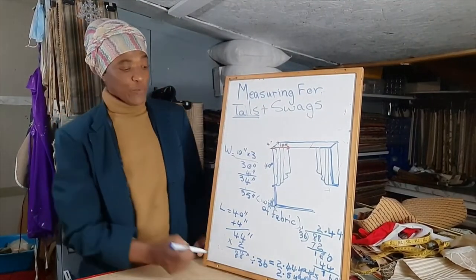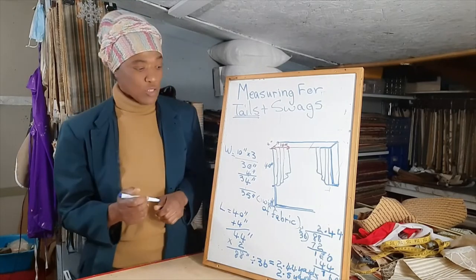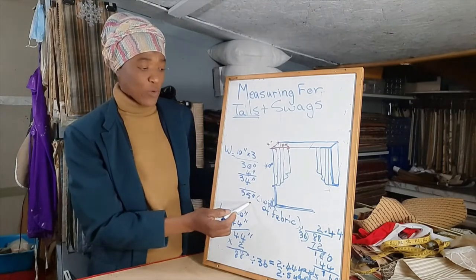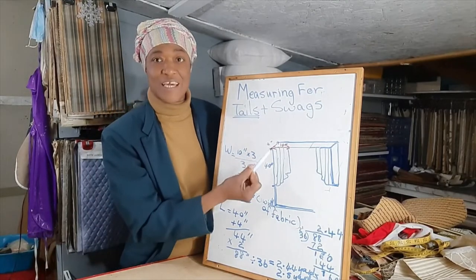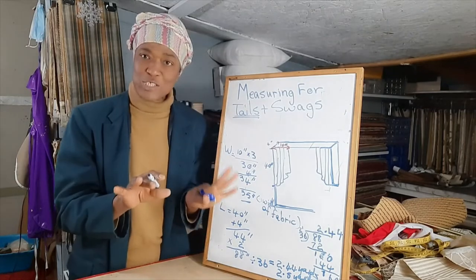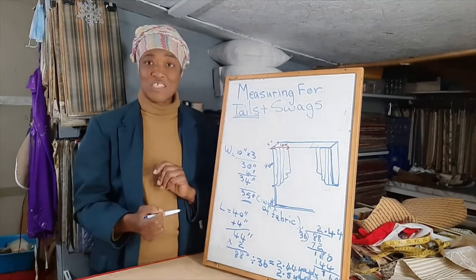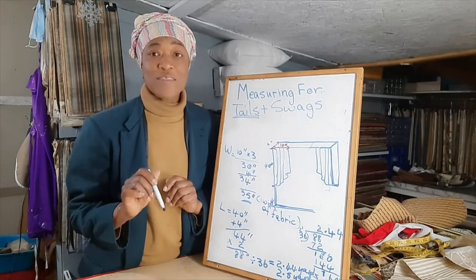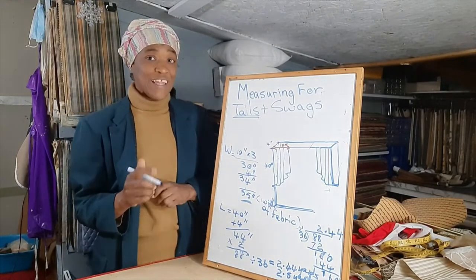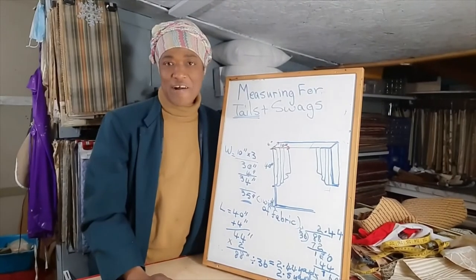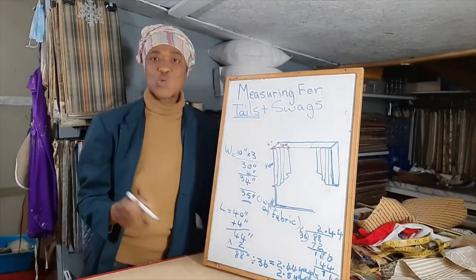So we will need 2.5 yards of 54-inch-wide fabric to make our two tails. The width we need is 35 inches, so if you find a fabric you like that is 36 inches wide, you could actually get away with that. Otherwise, we need 2.5 yards of 54-inch-wide fabric to make our two tails.